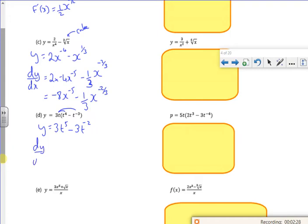So dy by dt, because I've got t now. What I should really stress is that the letter on the bottom tells you which letter you're changing the power on. So that would be 3 times 5, 15t to the 4, minus 3 times minus 2, 6t to the minus 1.